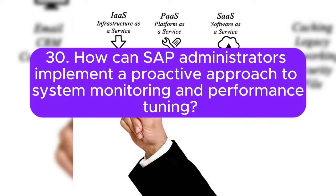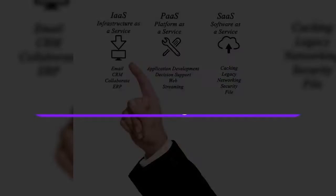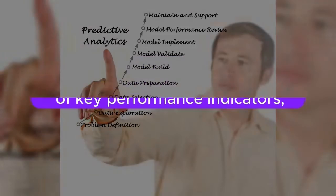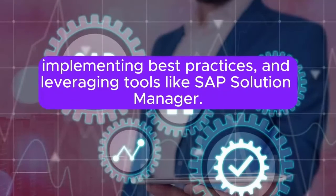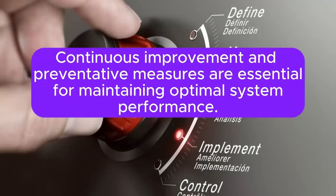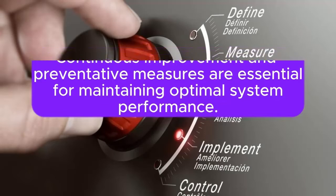30. How can SAP administrators implement a proactive approach to system monitoring and performance tuning? Answer: A proactive approach involves regular monitoring, analysis of key performance indicators, implementing best practices, and leveraging tools like SAP Solution Manager. Continuous improvement and preventative measures are essential for maintaining optimal system performance.